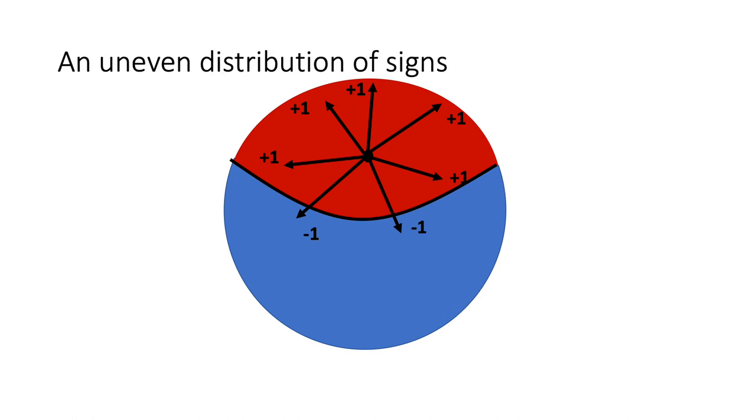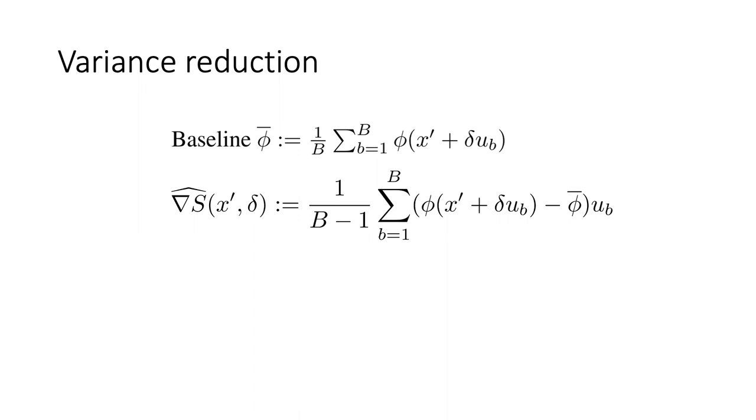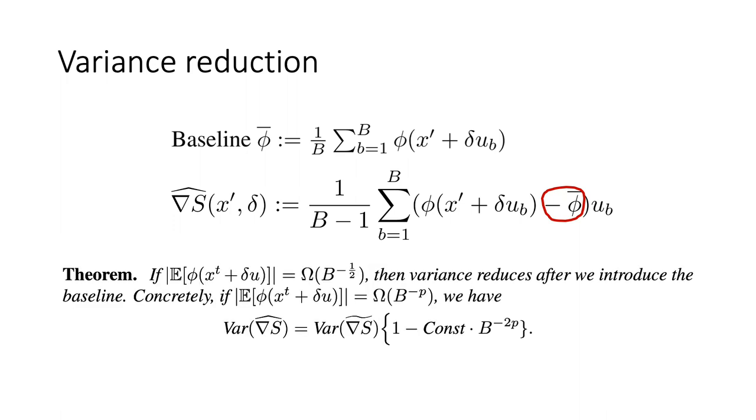Another practical concern is that there may still be an uneven distribution of signs in practice, as is shown here. To resolve this issue, we introduce a baseline phi bar, which is the average of sign of s over all random perturbations. By subtracting phi bar from phi for each random perturbation, we get the variance reduced estimate, gradient s hat. We can show variance reduces after we introduce the baseline, if there is an uneven distribution of signs.